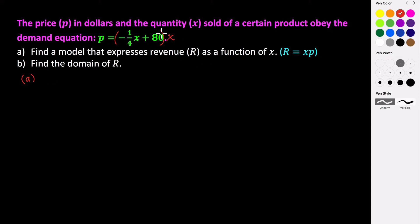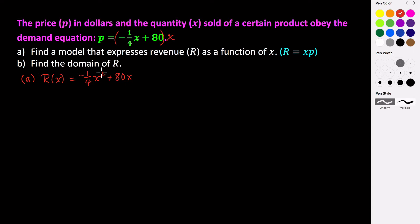Distributing x through the demand function gives us the revenue function: R(x) = negative one-fourth x squared plus 80x. Looking at this function, we see it's a quadratic with a negative leading coefficient, which means it opens downward.